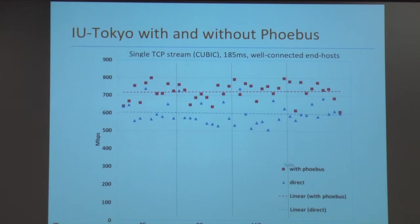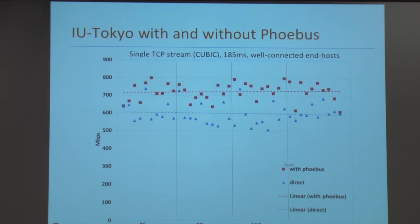We've been able to show a number of good performance gains. The most recent testing I've done is between Indiana University and Tokyo — a path of about 185 milliseconds. Even with well-connected, tuned end-hosts, taking advantage of WAN acceleration intermediaries in the network that perform automatic tuning and make better routing decisions, we see quite significant improvements. In our tests, we saw at least a 20% improvement just by going through one or two Phoebus gateways on the internet backbone to accelerate these GridFTP transfers.